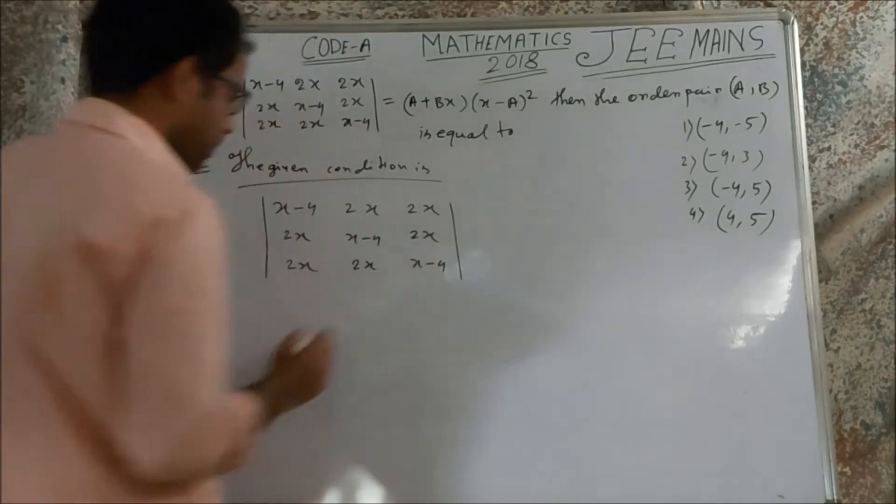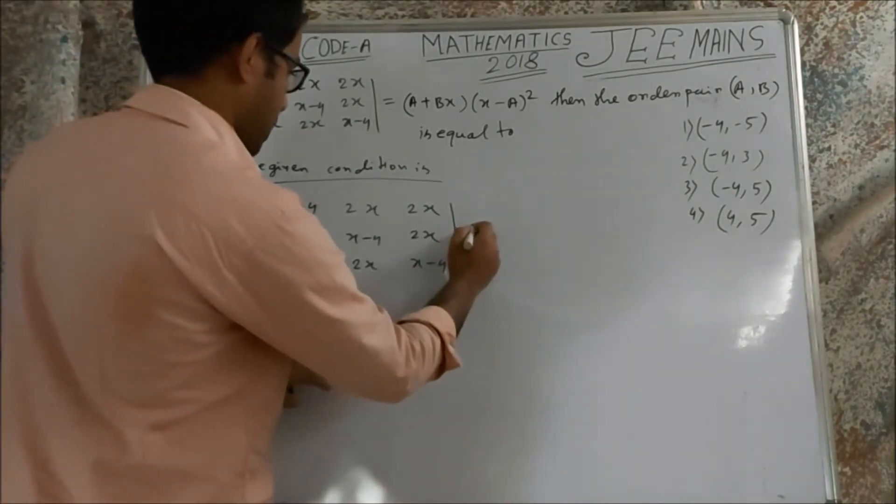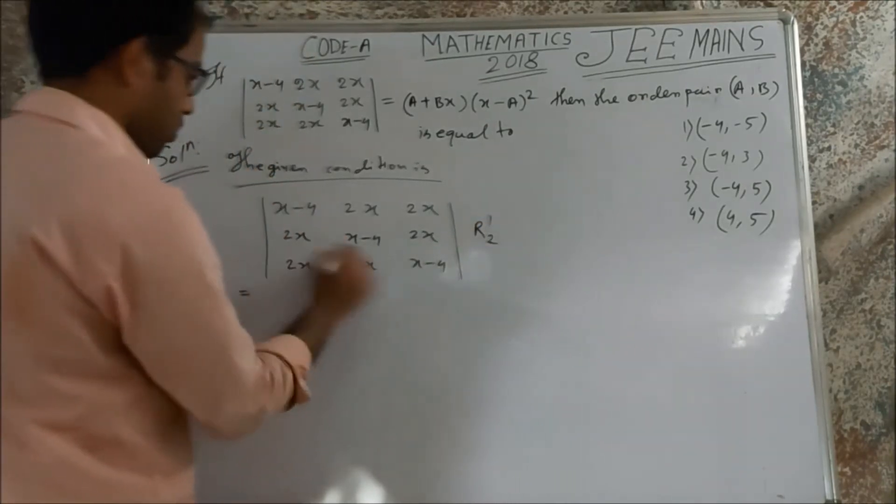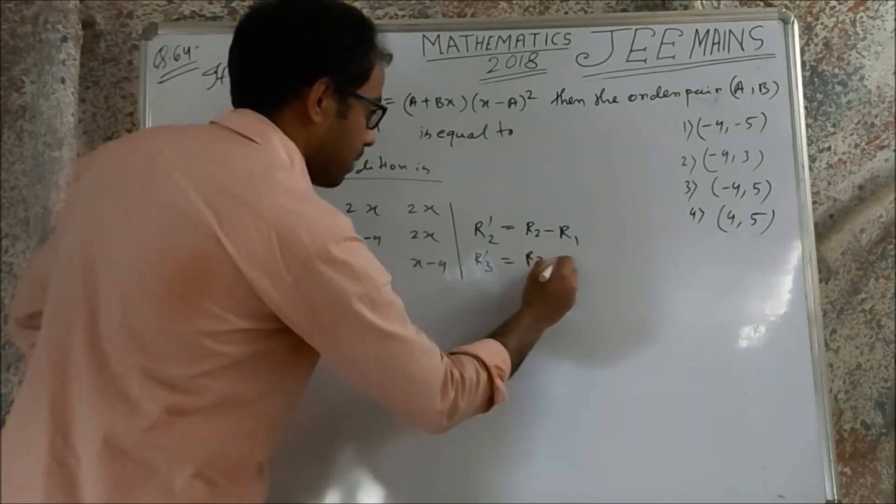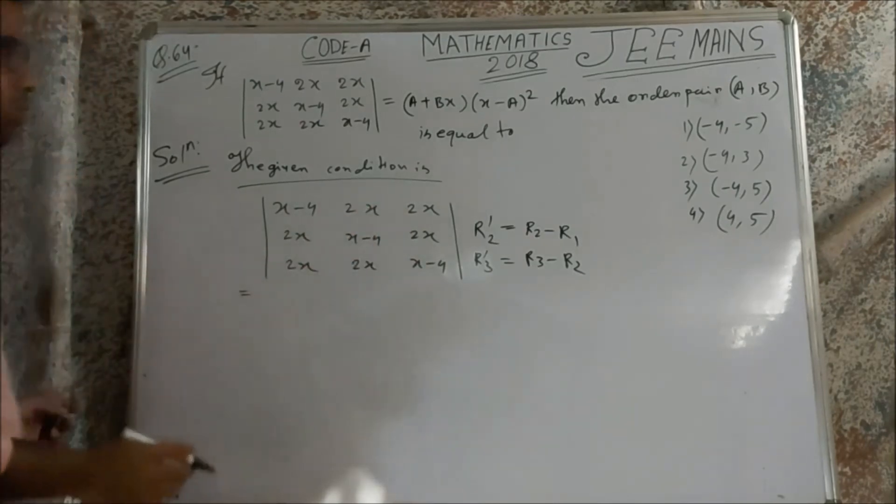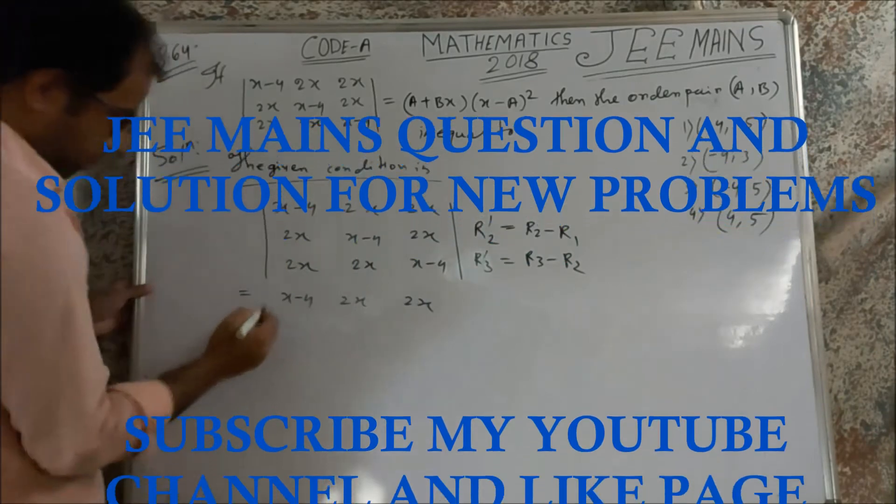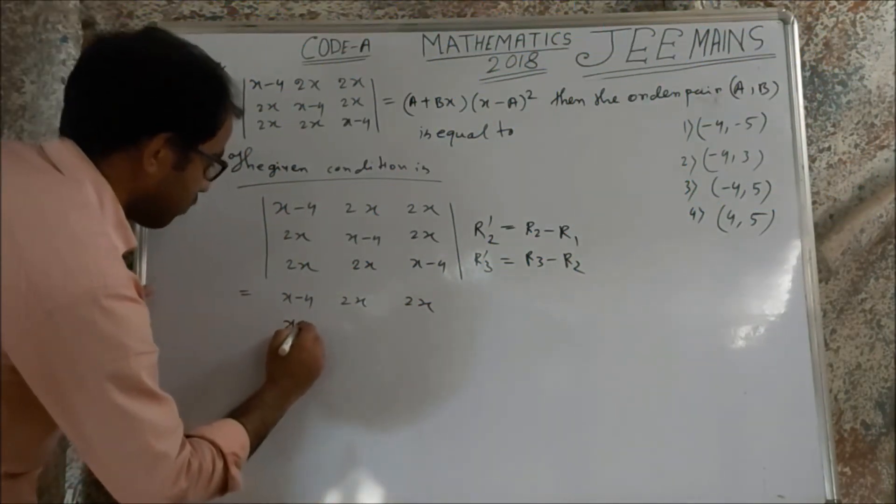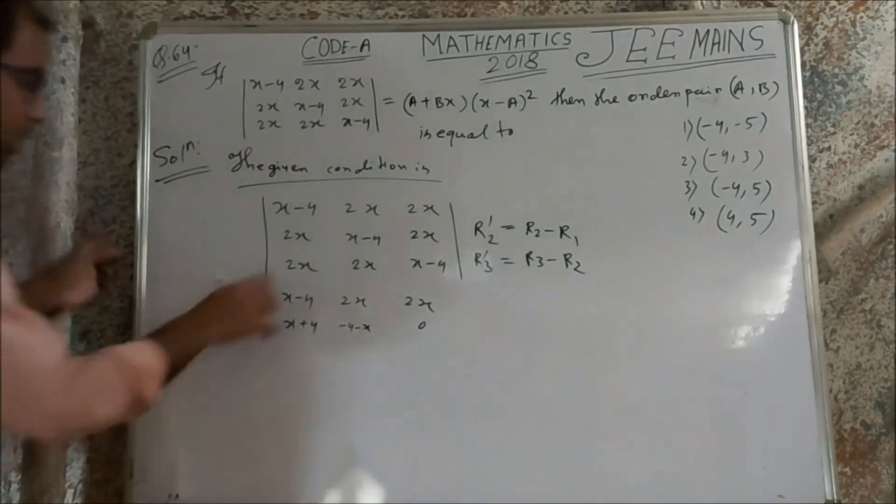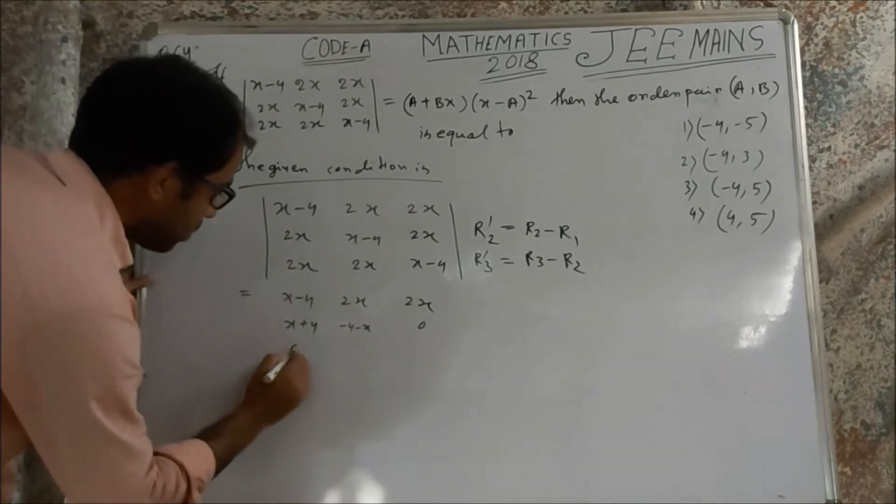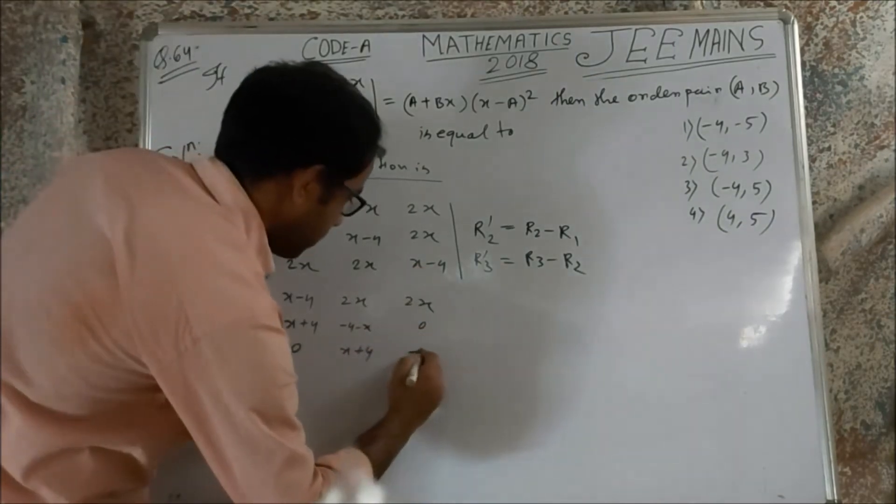Now, how we expand this determinant? First point: replacing the rows. This row R2 minus R1, and R3 dash, R3 minus R1. Now we can write row as x minus 4, 2x, 2x. Subtract this value: x plus 4, this is minus 4 minus x, this is 0. Second part, this minus this means 0, x plus 4. This means minus 4 minus x.